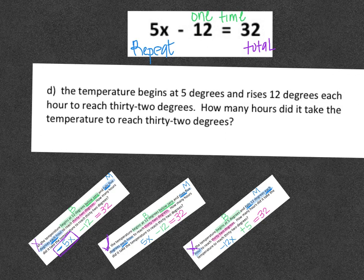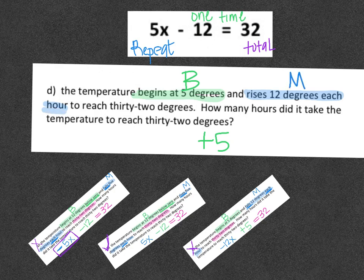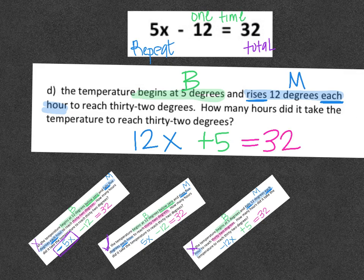And the last one, when you read through this, it says the temperature begins at 5 degrees. That's going to be my letter B, my first starting amount. And it said begins at 5, so that's plus 5. Then the next portion says rises 12 degrees each hour. It's definitely the M because it says each. And then rises lets me know that that's a positive 12. So I have 12x. And last but not least, it ends with 32 because that was the final temperature.